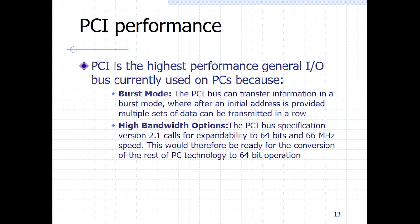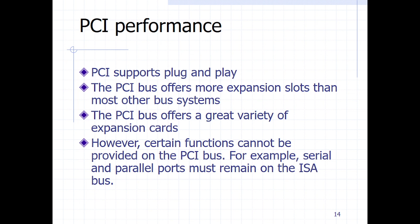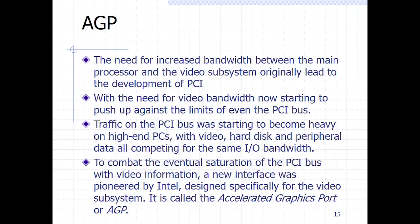PCI has enhanced performance on how input and output devices communicate — it can transfer information very fast. It also offers high bandwidth options; you can have speeds up to 66 MHz. It improved performance from the ISA option. It also supports newer devices that use plug-and-play and offers additional expansion slots — so if you need to add different cards to your system, PCI provides that option. Compared to the ISA, PCI is the most recommended for current computers.